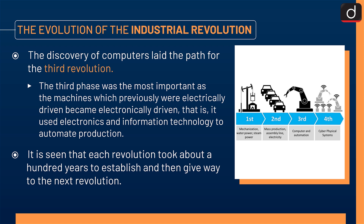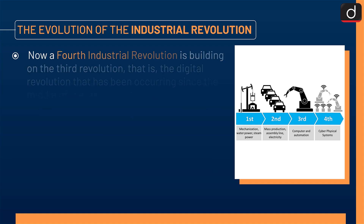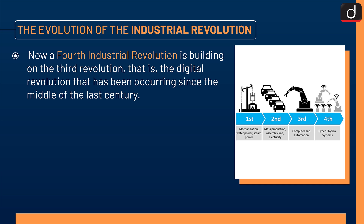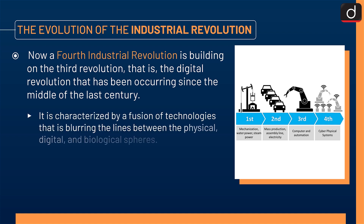It is seen that each revolution took about a hundred years to establish and then give way to the next. Now a fourth industrial revolution is building on the third — the digital revolution — that has been occurring since the middle of the last century. It is characterized by a fusion of technologies that is blurring the lines between the physical, digital, and biological spheres.